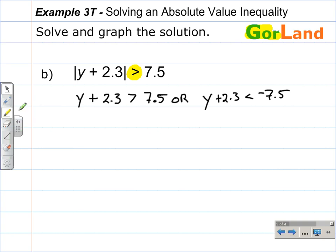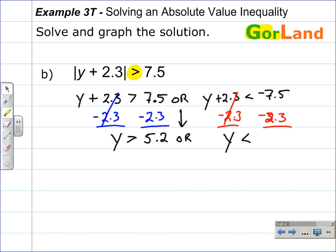And we solve each inequality separately. On the left-hand side, we'll subtract 2.3 from each side. The 2.3 minus 2.3 on the left goes away, leaving the y. Bring down the inequality symbol. 7.5 take away 2.3 gives 5.2. Bring down the OR. On this side of the compound inequality, we solve by subtracting 2.3 from both sides. The 2.3s on the left go away, leaving y. Bring down the inequality, the less than. Simplifying, negative 7.5 take away 2.3 gives negative 9.8.